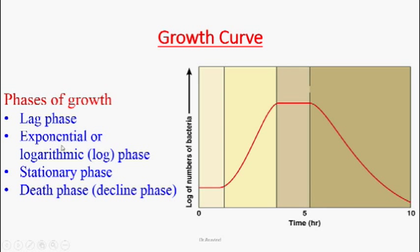After the lag phase comes the exponential or logarithmic phase. Bacteria begin replicating by binary fission — one organism divides into two, two into four, four into eight — increasing the bacterial number exponentially. The growth curve rises steeply during this phase.